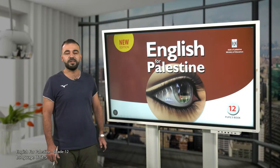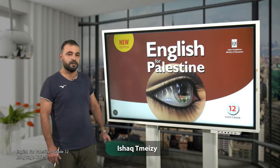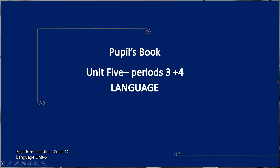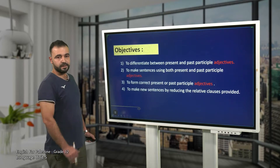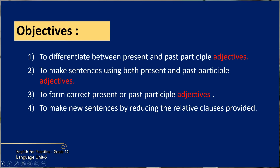Hello dear students and welcome to English for Palestine Grade 12. Please move to Unit 5, periods 3 and 4, and to the language class objectives. By the end of this lesson you are expected to: one, differentiate between present and past participle adjectives; two, make sentences using both present and past participle adjectives; three, form correct present or past participle adjectives.